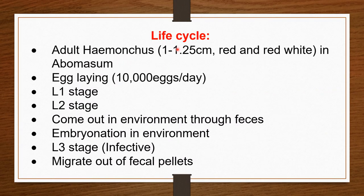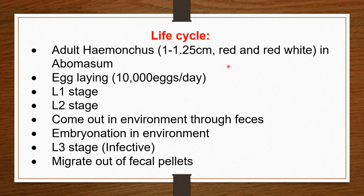Haemonchus has a very simple life cycle. The adult worms are found in the abomasum and can be seen with the naked eye. The length is 1 to 1.25 cm, and the color is red and red-white. In the abomasum, they lay eggs — approximately 10,000 eggs per day — which can cause a serious infection given these very large numbers.